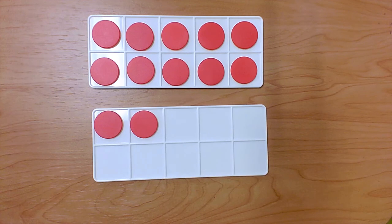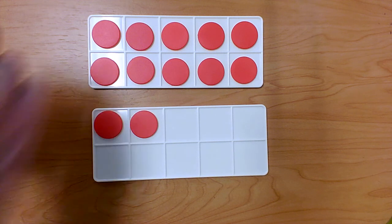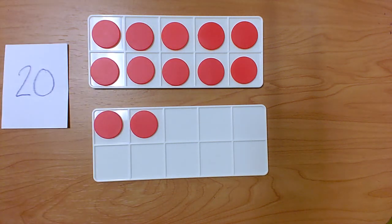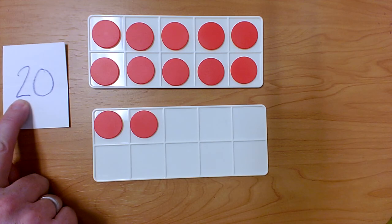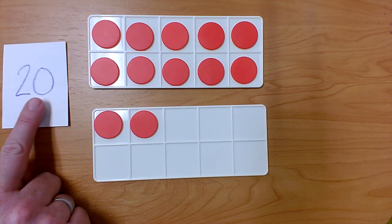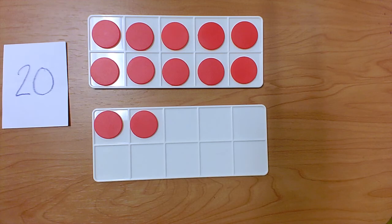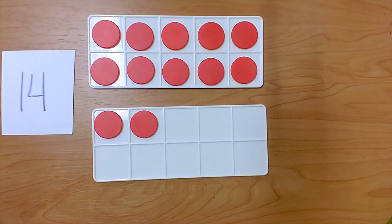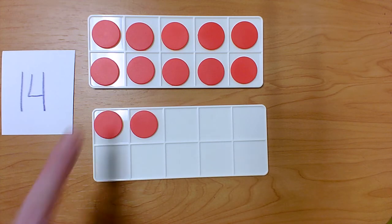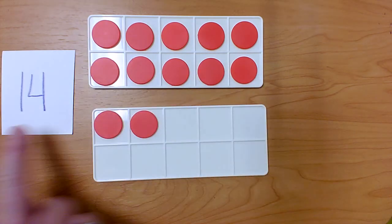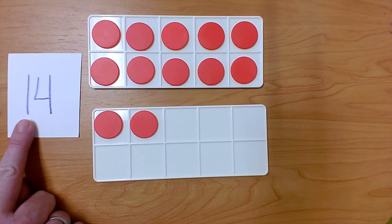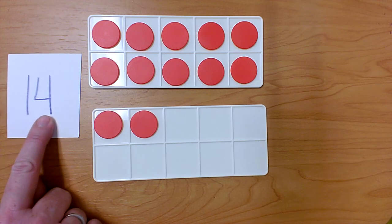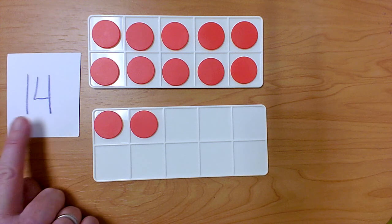How many red circles do I have in my 10 frame? Does it match this card? No. This number would have two groups of 10s and zero extra ones. It doesn't have two full 10 frames, so we know that card's not right. Does it match this card? Well, there's one full group of 10, so there is a one in the tens place. One group of 10 and four extra ones. This number is 14.